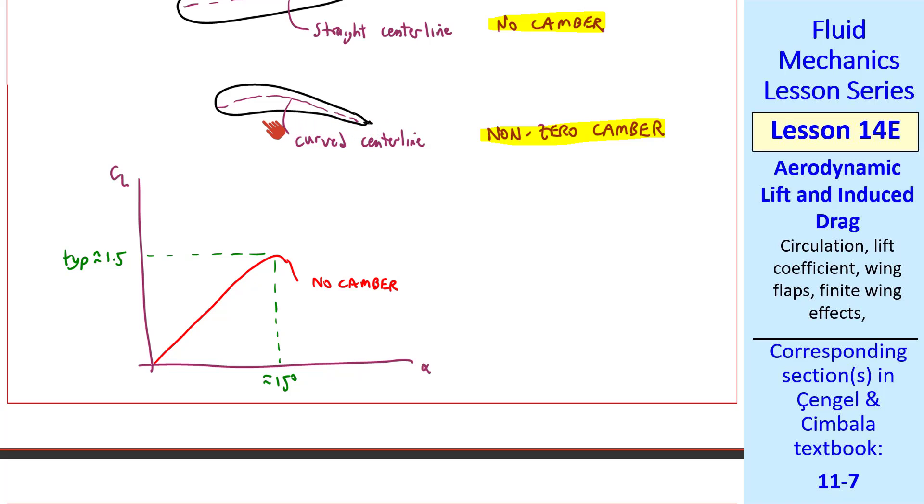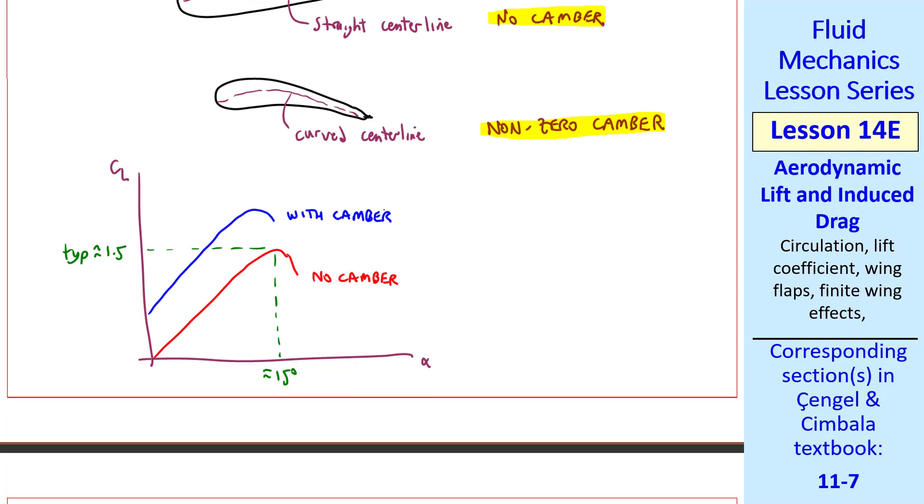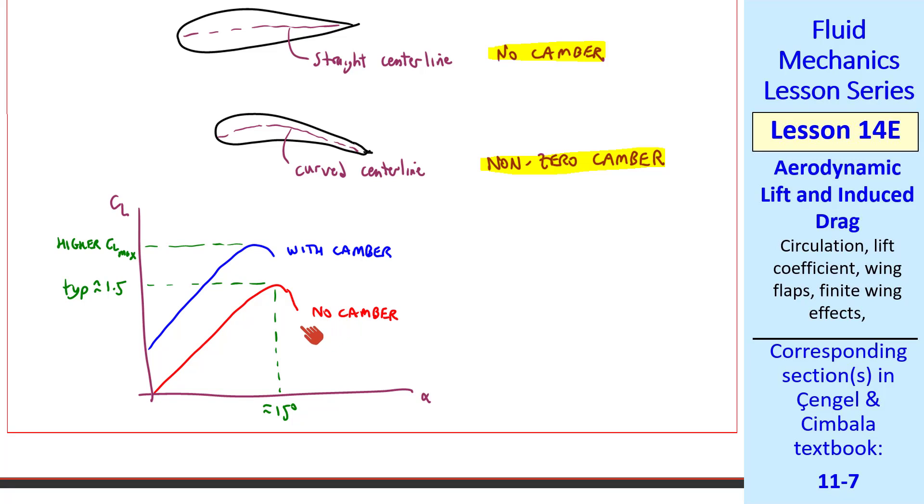As you might imagine, the camber gives this airfoil some lift, even when at zero angle of attack, since it angles the flow downward. So the curve might look more like this, a non-zero lift even at alpha equals zero, with a higher CL max. But depending on the design, it may stall at an earlier alpha. By the way, as I mentioned in a previous lesson, when you have stall, the irrotational or potential outer flow solution breaks down because of boundary layer separation.